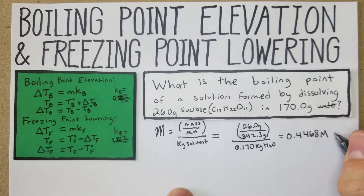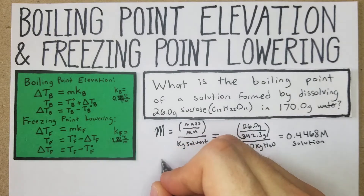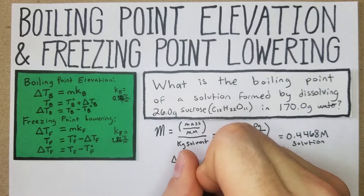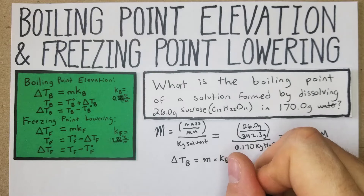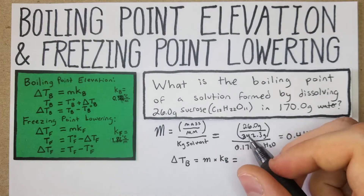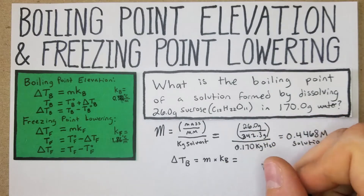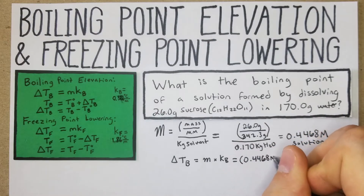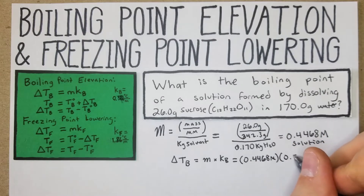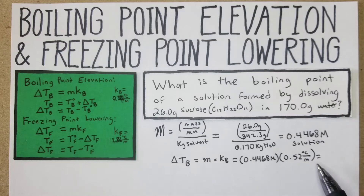We get 0.4468 molal — that is the molality of our solution. From there we apply the Kb constant for water, which is 0.52°C per molal. We take the molality we got — 0.4468 — and multiply it by 0.52. Writing our units out, the °C/molal and molal cancel, leaving us with just temperature, which is exactly what we want.